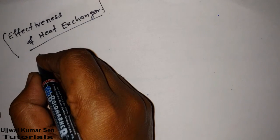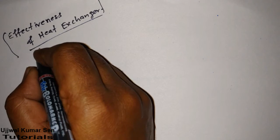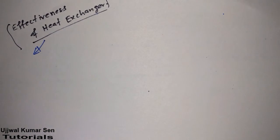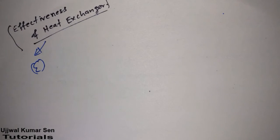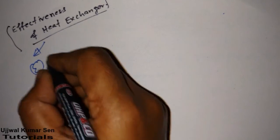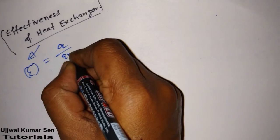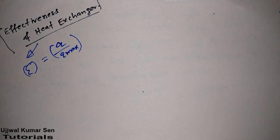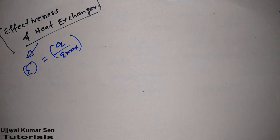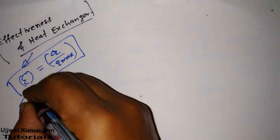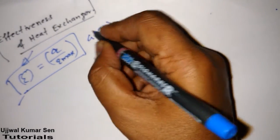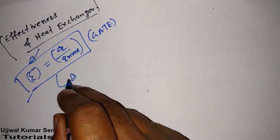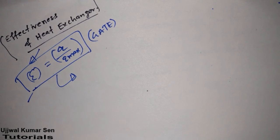What is the effectiveness of a heat exchanger? It is denoted by epsilon (ε), and the definition is ε = q / q_max, where q is the actual heat transfer rate by the heat exchanger and q_max is the maximum possible heat transfer rate. After this definition we have two important formulas to learn.